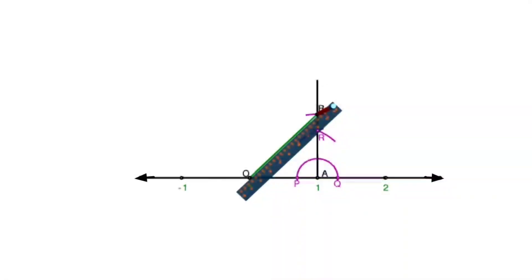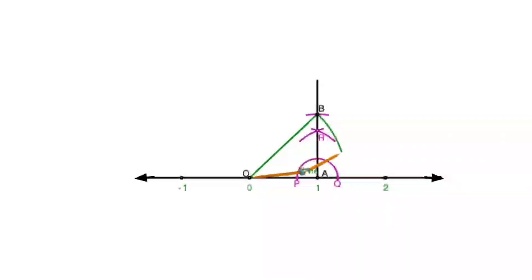Now once this right triangle is formed, how much is the length OB? By Pythagoras theorem, since OA equals one unit and AB equals one unit, OB comes out to be root 2. So with O as center and radius equal to OB, I make an arc. Wherever this arc intersects the number line, that point — let's call it C — will represent root 2 on the number line. So OC is equal to root 2 units and point C represents root 2 on the number line.